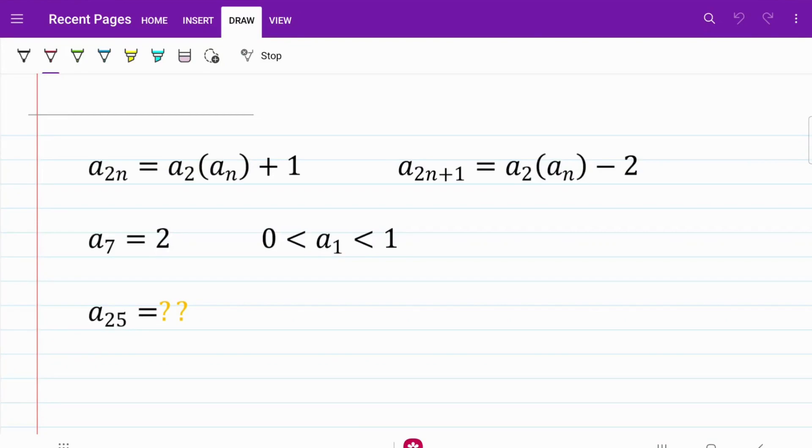In the following question, we're given a series where each component is governed by one of two formulas. It's either the formula of A2n = A2(An) + 1 or A2n+1 = A2(An) - 2. From there, we're given A7 = 2, and we're trying to find A25.